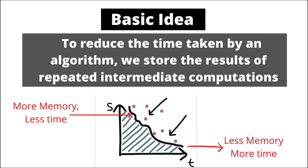What we are doing here is trading off between time and memory. To reduce the time taken by our algorithm, we consume more memory. We store the results of computations done by our algorithm so that we don't need to compute them again and again — we can simply reference them from memory. Dynamic programming is a way of making your algorithm work more efficiently by storing intermediate results. It works very well when your algorithm has repetitive computations, so you don't need to repeat those computations again.